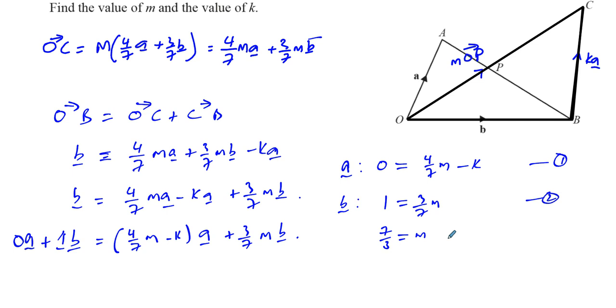And I can use that now because I can see from the first equation, if I take the first equation, I can say k is equal to 4 over 7 times m. I know that m is 7 over 3. So it's 4 over 7 times 7 over 3. The 7's cancel out. She's left with 4 over 3.